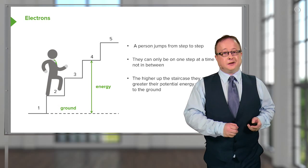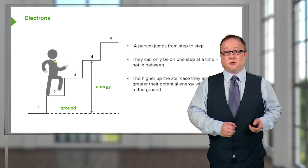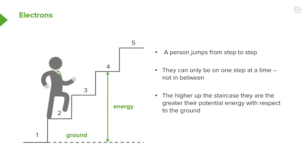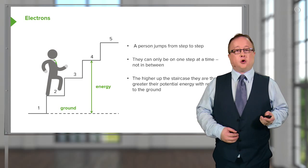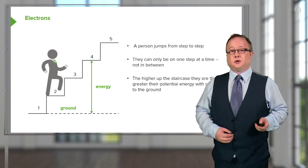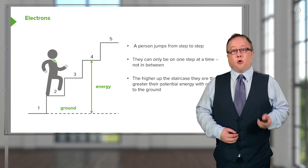To use an analogy for electrons and the quantization of energy, take the example of a staircase shown on the board. A person moves from one step to another, but they can only be on one step at a time. The higher up the staircase they are, the greater the amount of potential energy they have with respect to the ground — potential energy equals mass times gravity times height. Also, you can only move one step at a time; it is not possible to move more than one step at a time. Movement from step four to step two is forbidden, but movement from step three to step two is allowed.